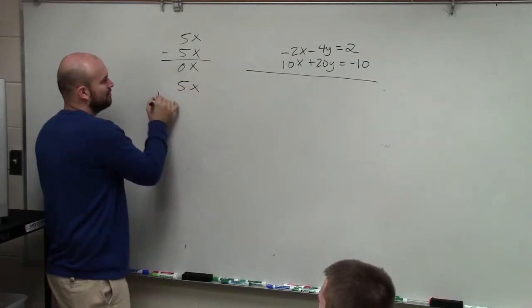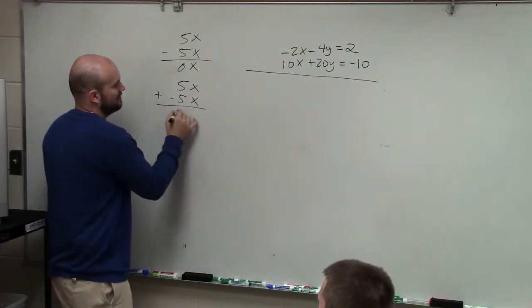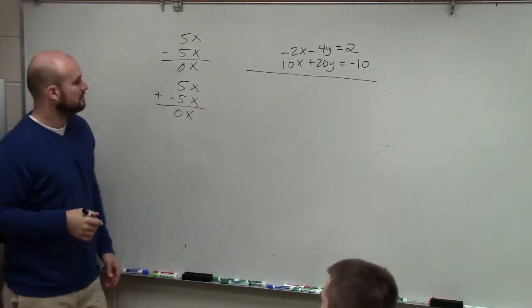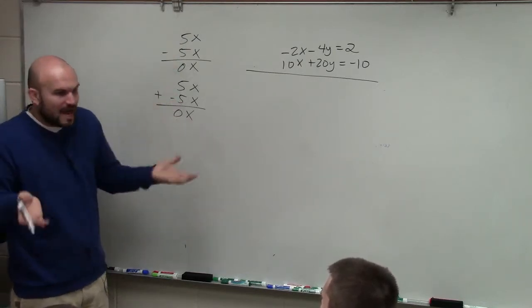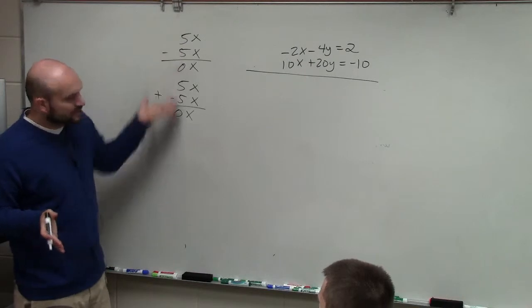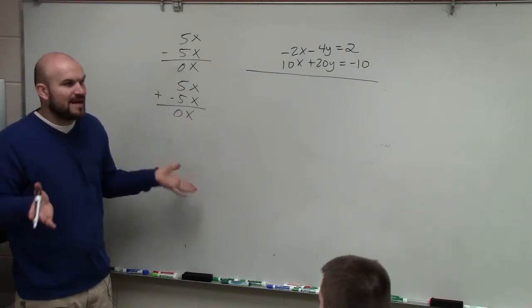Or you could say 5x + (-5x) is 0x. Do you see? So we've got to have the coefficients be the same. If we're going to add or subtract them, the absolute value of the coefficients has to be the same.